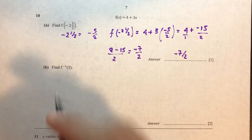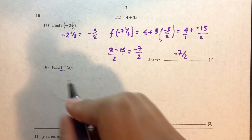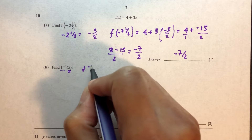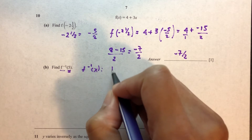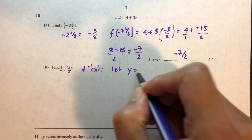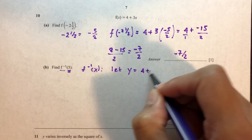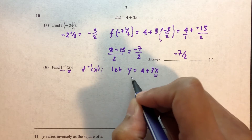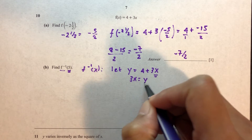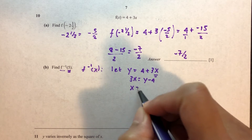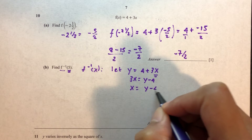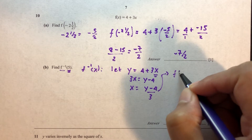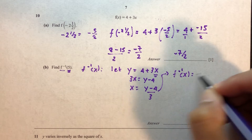Now we move on to f inverse. To find f inverse, we first let y equal to the function, which is 4 plus 3x. Now we have to make x the subject of formula. So 3x is equal to y minus 4, and x equals y minus 4 over 3. This gives us f inverse of x — we replace y by x.